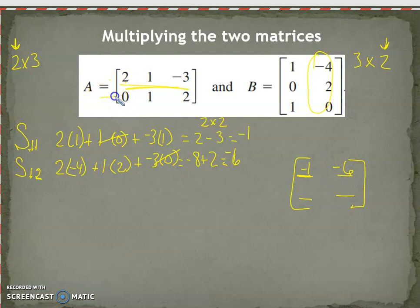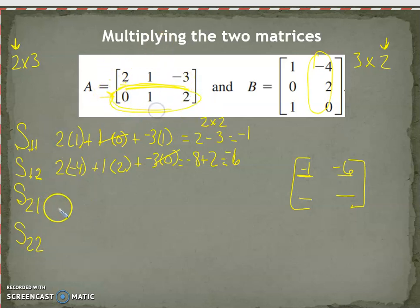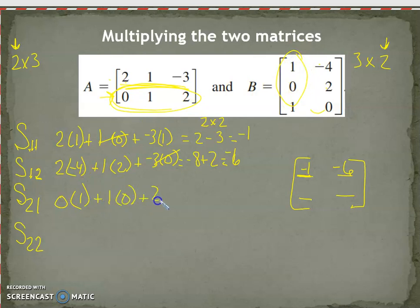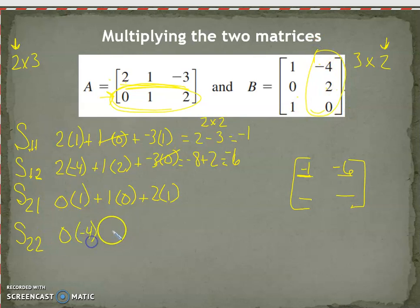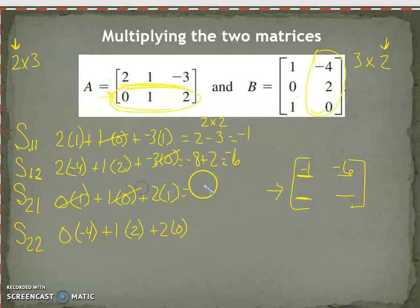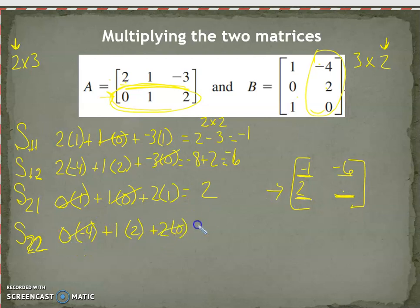Now we also have to do the second row — second row, first column and second row, second column. Second row, first column: zero times one, plus one times zero, plus two times one. Then that same row multiplied by the second column: zero times negative four, plus one times two, plus two times zero. Second row, first column gives us zero plus zero plus two, so two. Second row, second column gives us zero plus two plus zero, so two. This is the solution matrix.